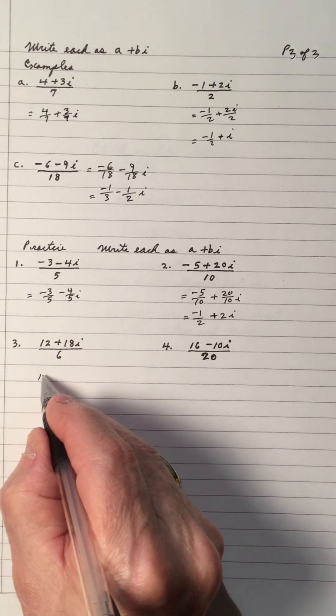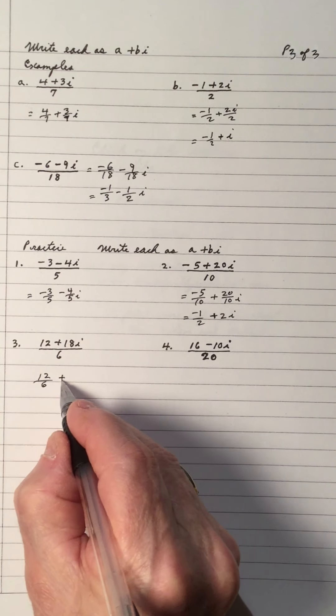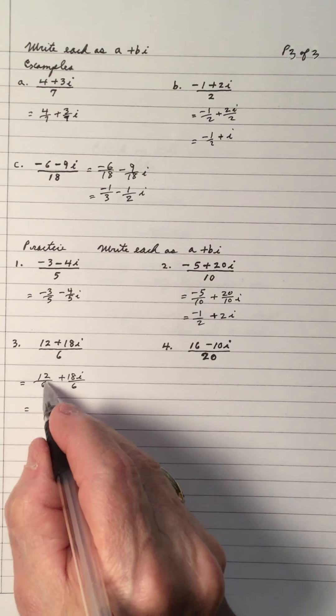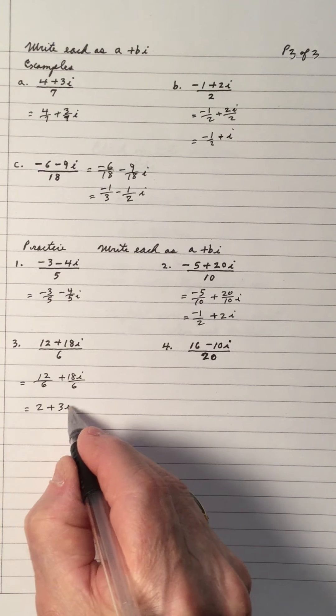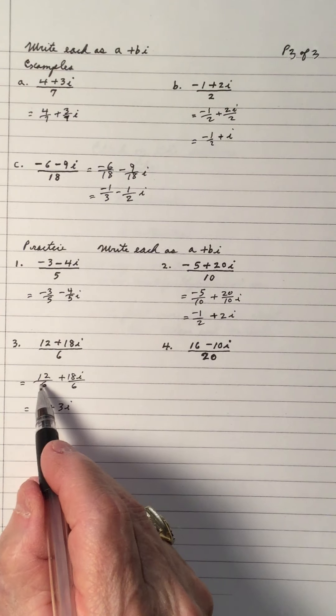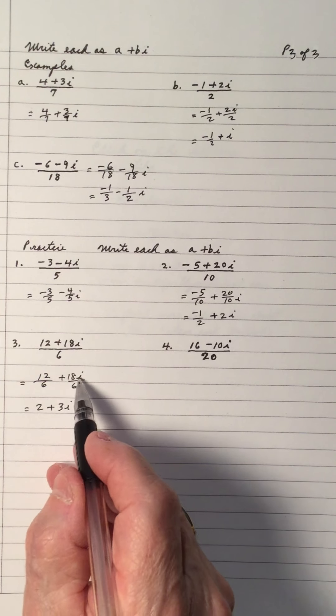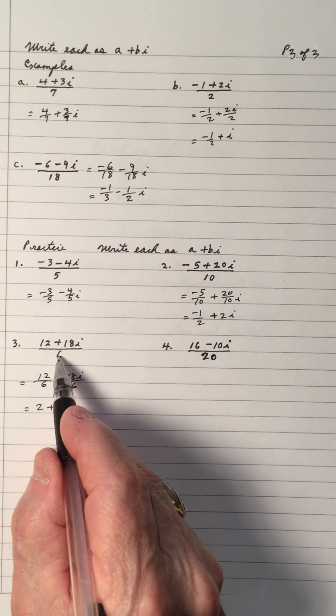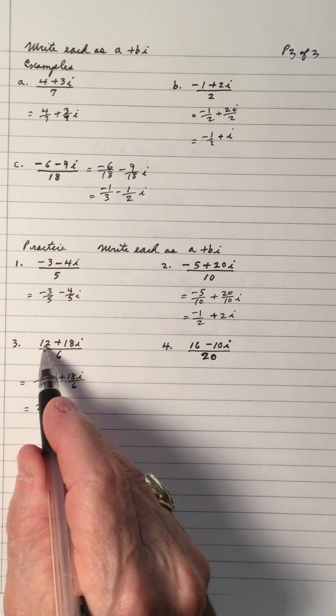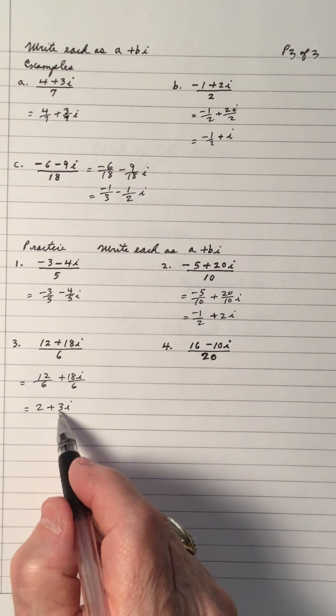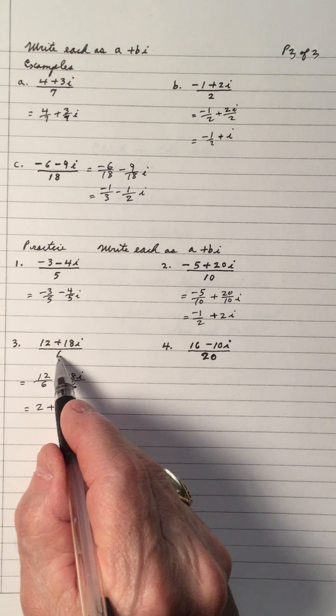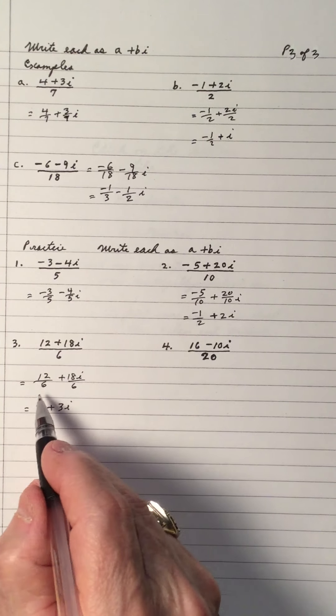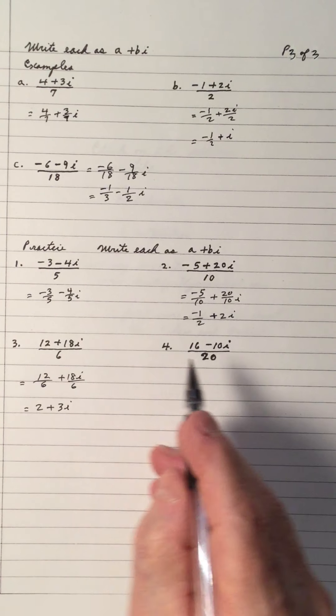Number 3. We divide both parts by 6. And, that gives us 2 plus 3i. Notice, I wrote it as two parts. 12 divided by 6 and 18i divided by 6. This is showing the workings. You could, if you want, divide 6 into both of these and just get 12 divided by 6 is 2. 18 divided by 6 is 3i. But, be careful. If you divide 6 into 12, you also got to divide 6 into 18. 6 goes into both of these. So, this is a better way of expressing it to make sure you're okay.